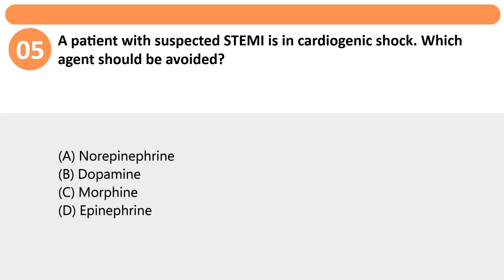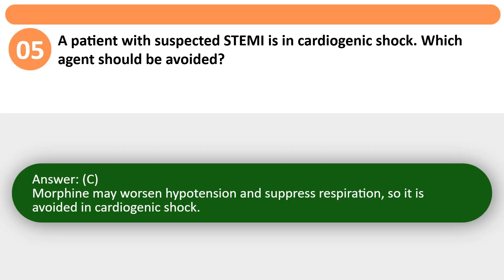A patient with suspected STEMI is in cardiogenic shock. Which agent should be avoided? A. Norepinephrine. B. Dopamine. C. Morphine. D. Epinephrine. Answer: C. Morphine may worsen hypotension and suppress respiration, so it is avoided in cardiogenic shock.